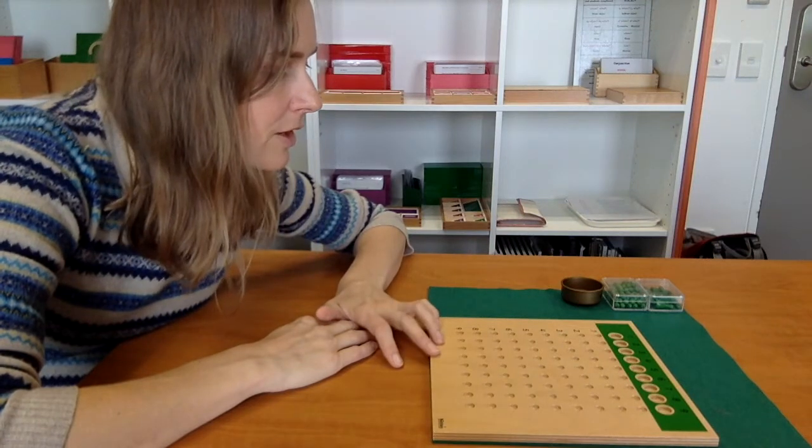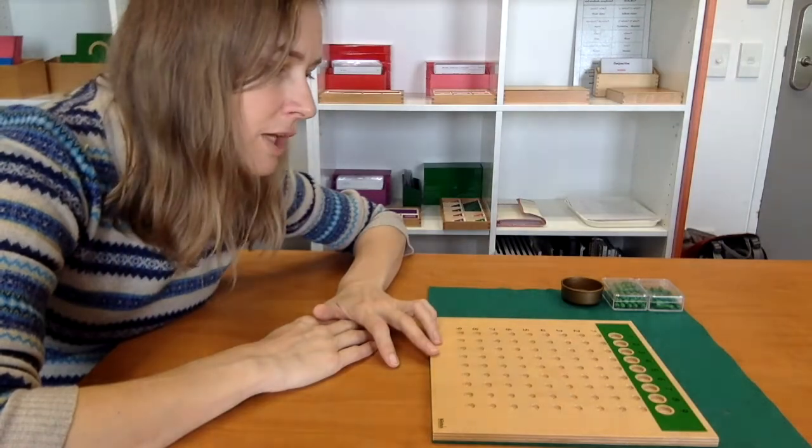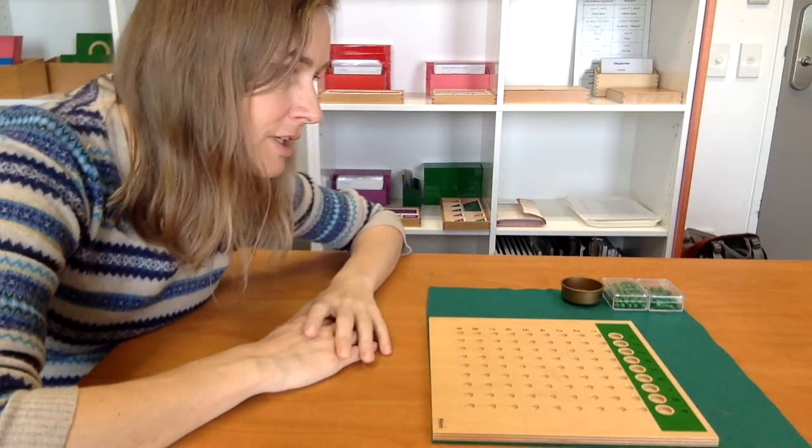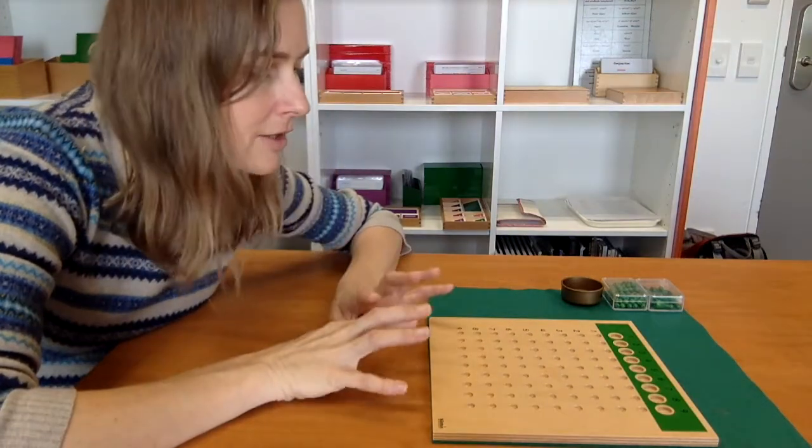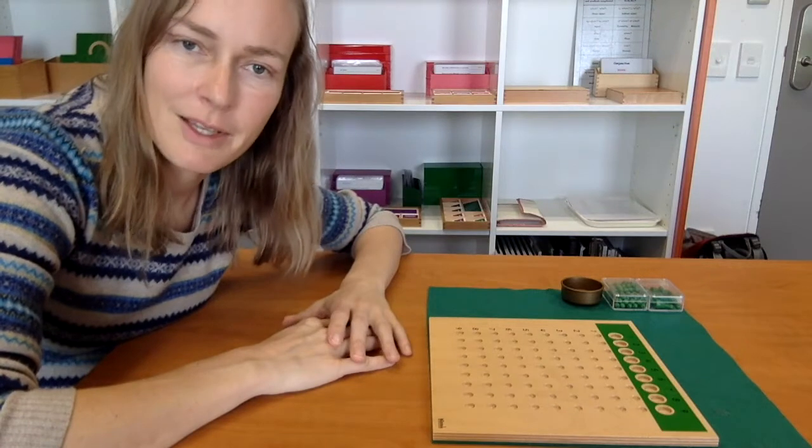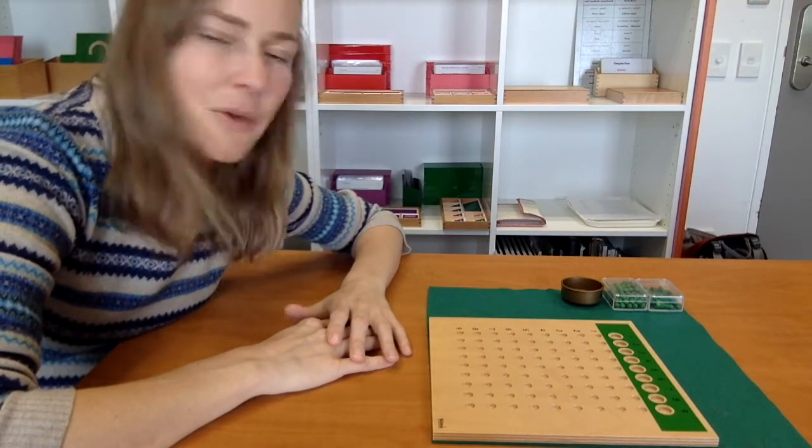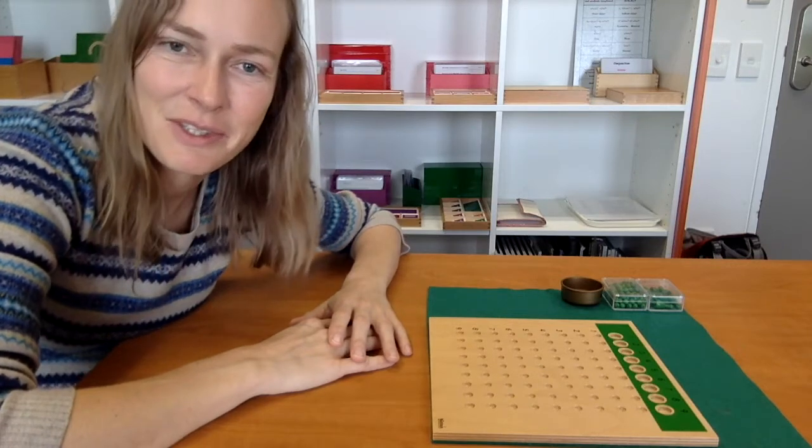The first time you work with this material with a child, you want to think of a dividend and divisor which doesn't leave a remainder. But let's pretend they've done this before and I can go through it a bit quicker. We're gonna have a remainder. Dynamic division.